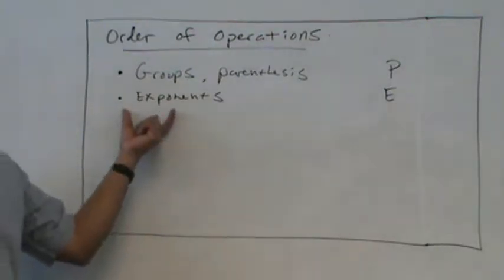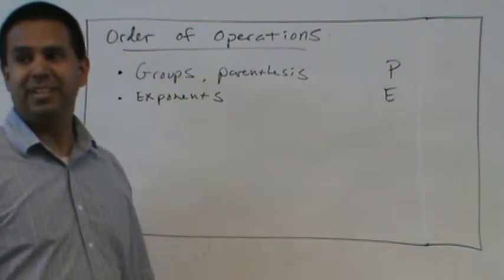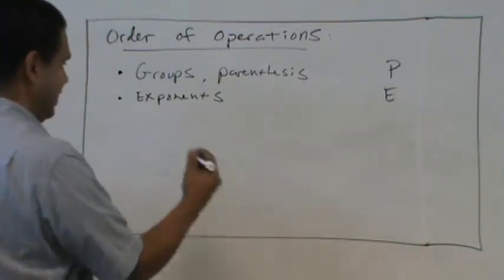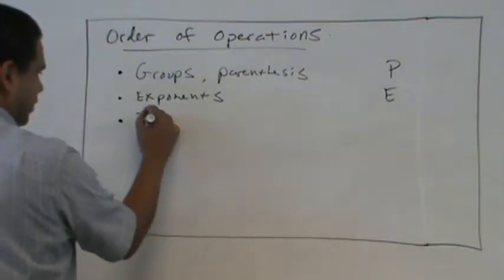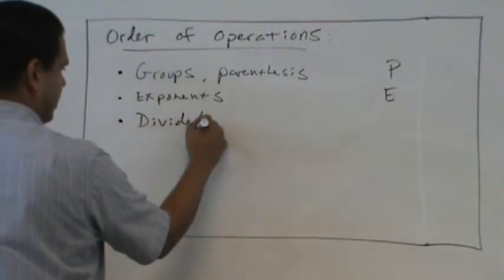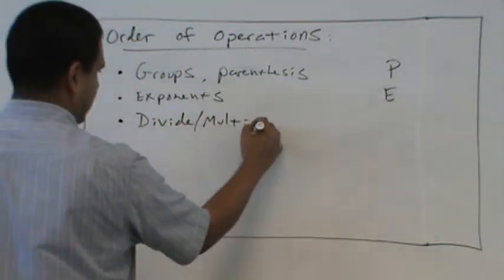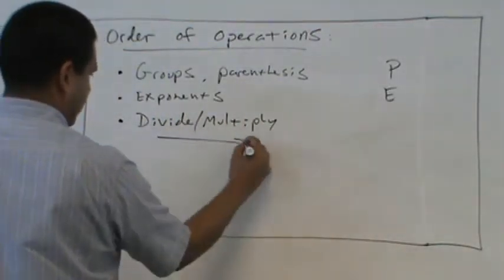And after exponents, how do we multiply and divide? Left to right. From left to right. So we divide and multiply from left to right.